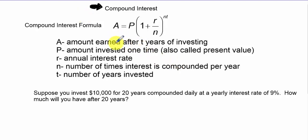Here's our compound interest formula: A equals P times the quantity 1 plus r over n to the nt. A is the amount earned after t years of investing. P is the amount invested or the amount of money taken out as a loan, called the present value. R is the annual interest rate.